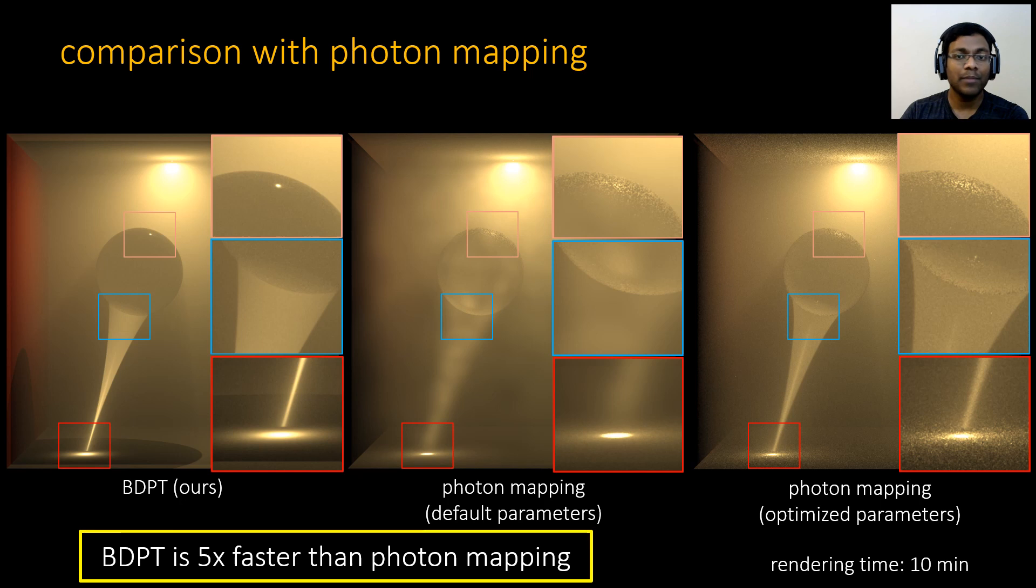Note that photon mapping eventually converges. We notice that BDPT converges five times faster than photon mapping. Therefore, in addition to being unbiased and requiring no parameter fine-tuning, BDPT is much faster.